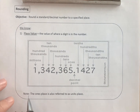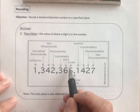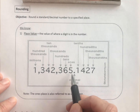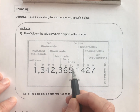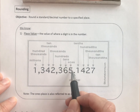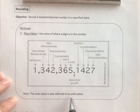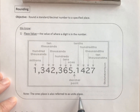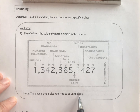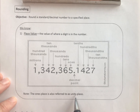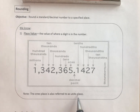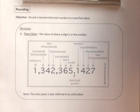Note that for the ones place, we don't often say 'round to the nearest one.' It's usually 'round to the nearest unit,' or as we'll see later, 'round to the nearest dollar,' 'round to the nearest pound,' 'round to the nearest inch,' etc.